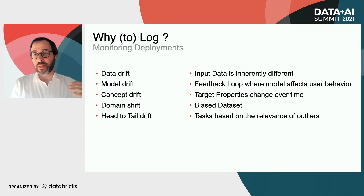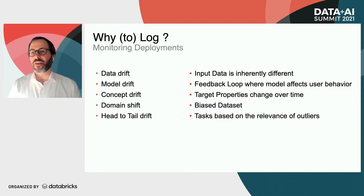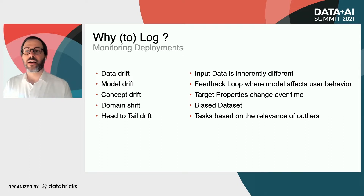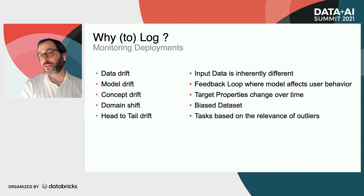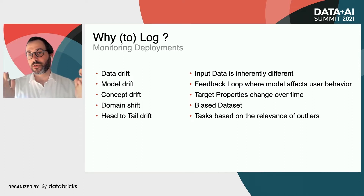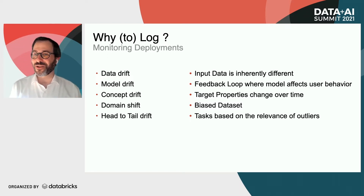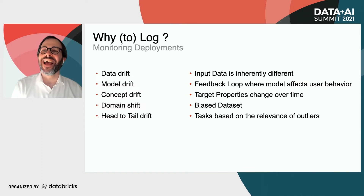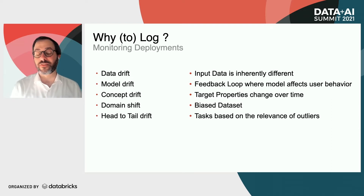There's not a one-to-one relationship between all these terms, but usually data drifts are associated with the input data being inherently different. Model drift and concept drift are cases where you are affecting the targets themselves and they are modifying their behavior, or the targets are changing over time because you use a specific window when doing your training or production set data testing. Domain drifts are associated with the training set actually being biased compared to what you started with. And head-to-tail drift is where the task you're looking at is actually dependent on only outliers and you only have the head of the distribution for training and production testing. So when you go to actual deployment, all you have is trying to figure out outliers and your dataset is inherently different from what you started with.